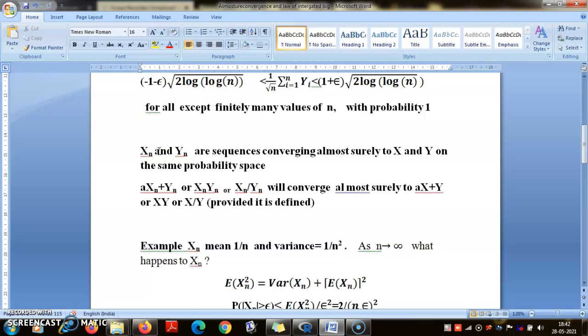This is just like pointwise convergence. This is what happens exactly in the case of pointwise convergence. If I have two sequences of real-valued functions fn and gn converging pointwise on the same domain, then essentially you will have this result. So this is no surprise.